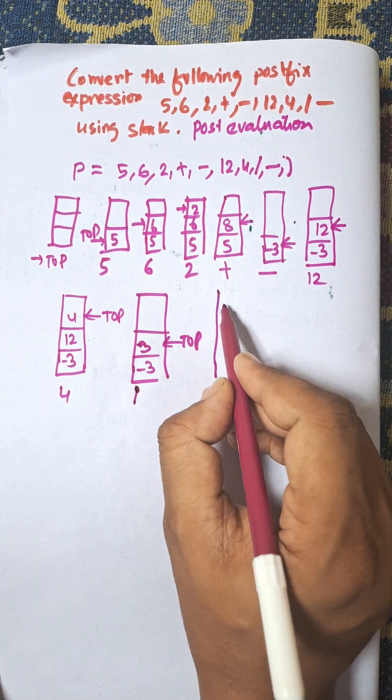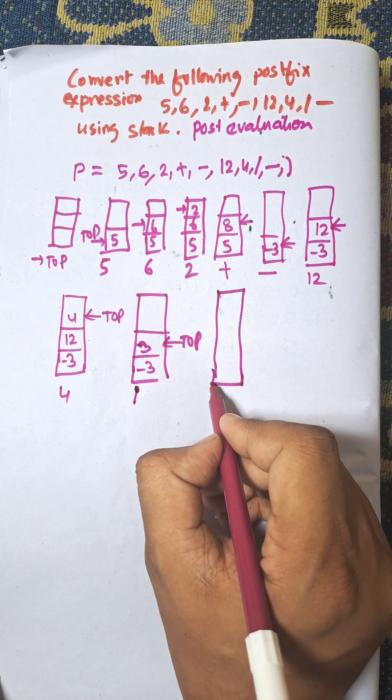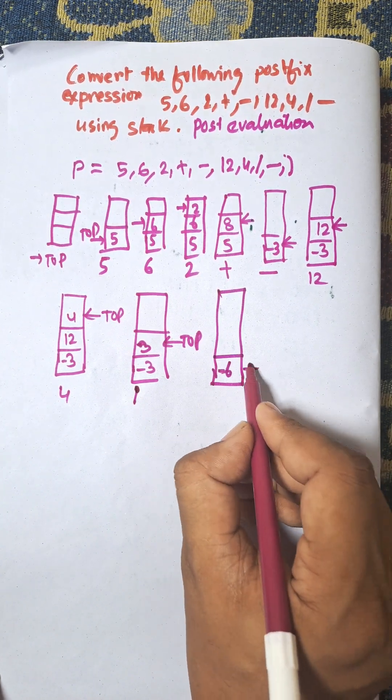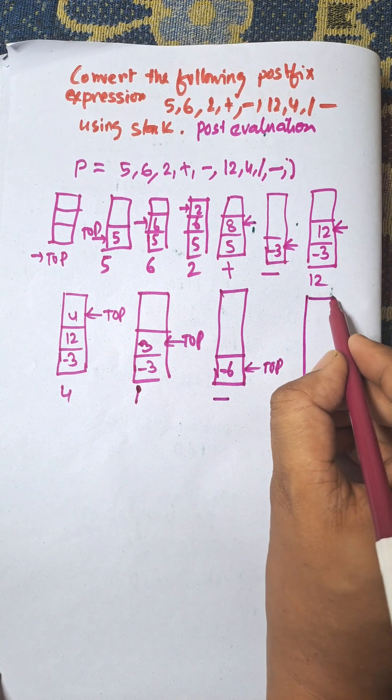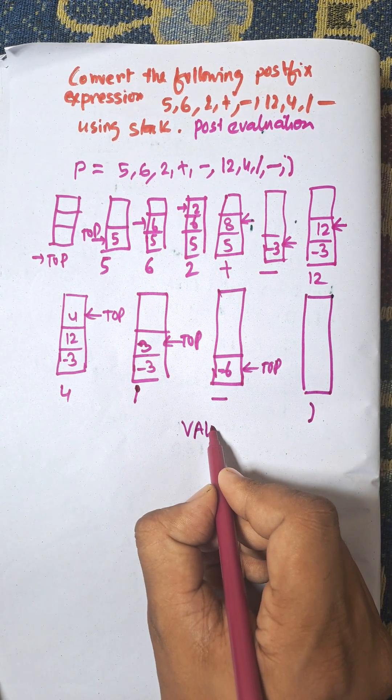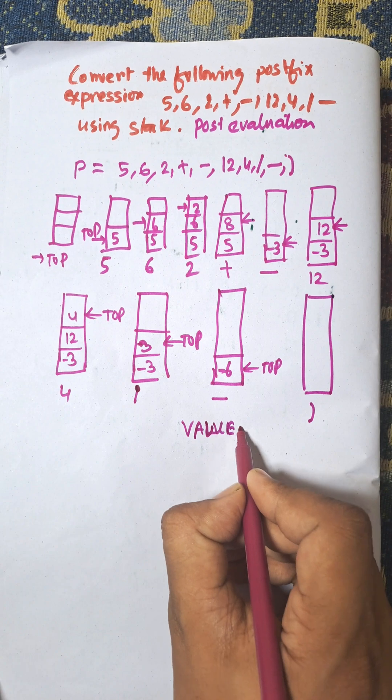And finally, minus operation. And minus 3, and minus 3, that is equal to minus 6. And this is for minus operation, when a closing bracket has arrived, then value equal to minus 6.